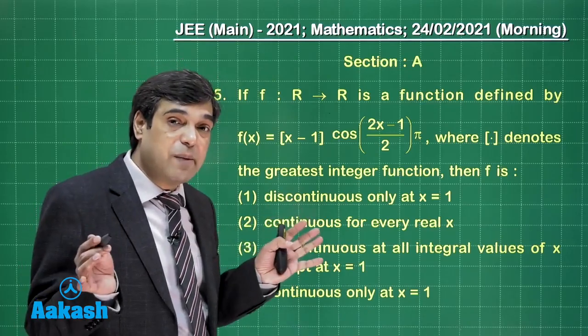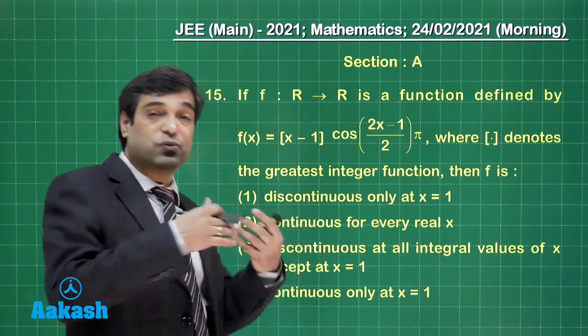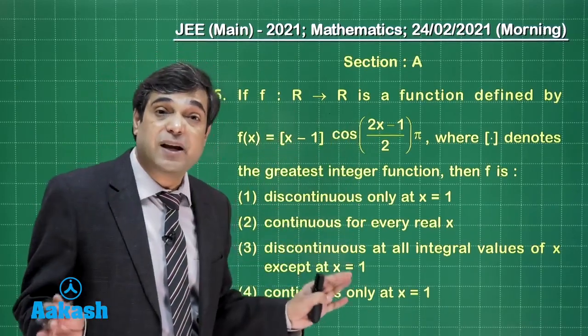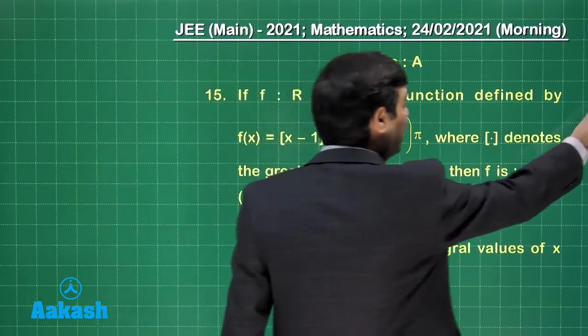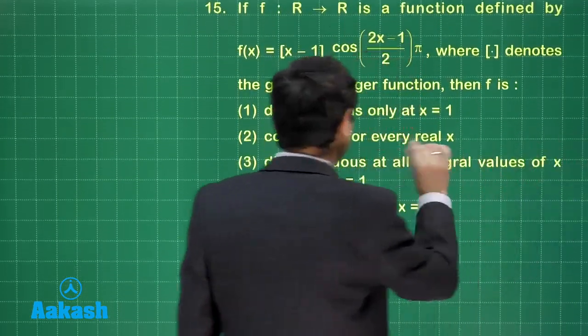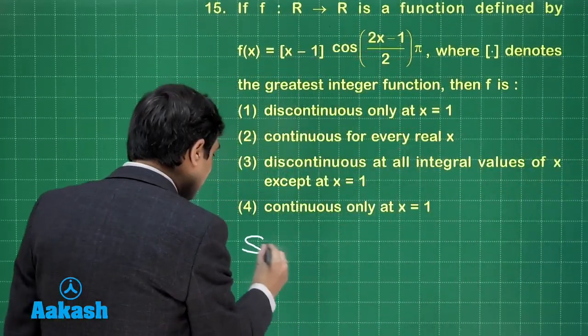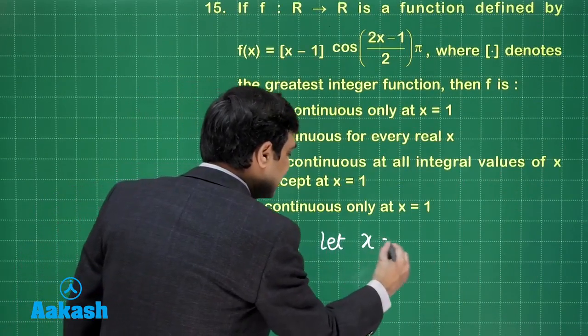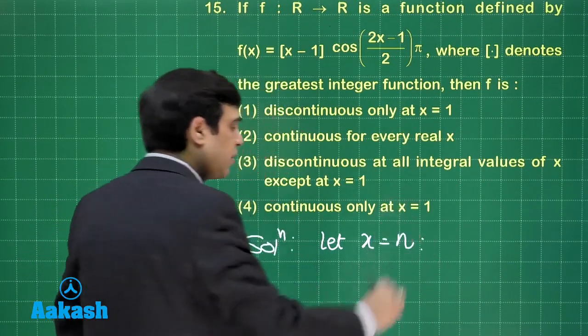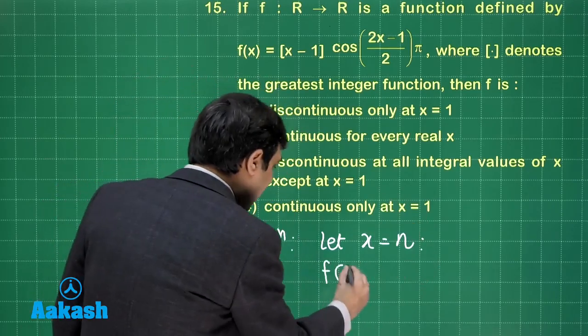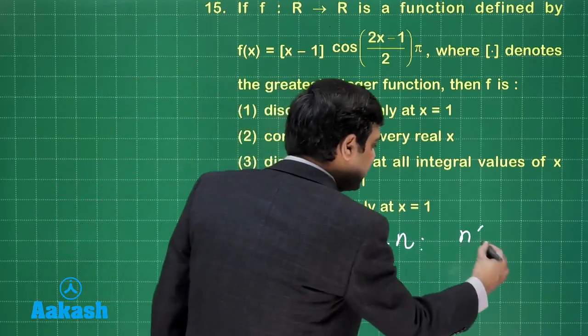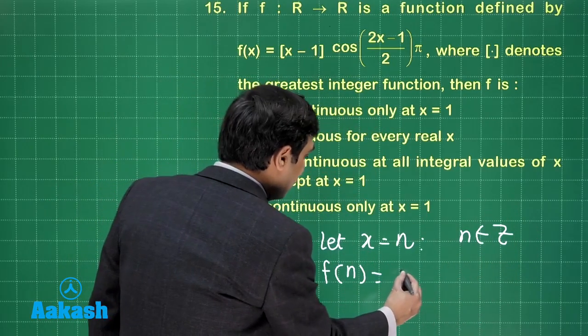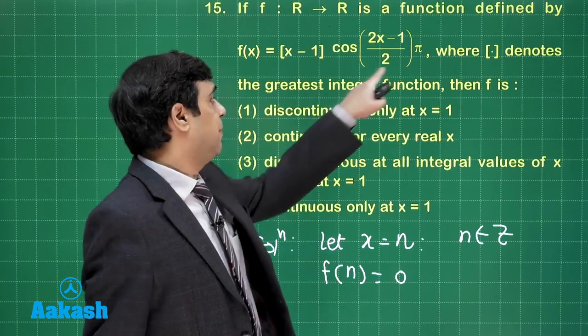It would be integral odd multiples of pi by 2. Odd multiples of pi by 2 that will take it towards 0. So whenever it is trying to make it discontinuous, it will make it 0. This will become continuous everywhere. So the correct answer will be it is continuous for every real x. You can also check it by considering let x is equal to n, and I am looking for continuity about point n. So f of n, where n is any integer.